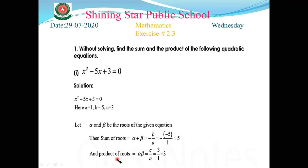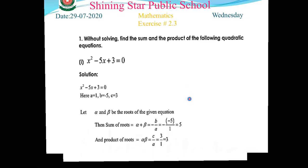For the product of roots, alpha times beta = c/a. Here c is 3 and a is 1, so the product of roots is 3.